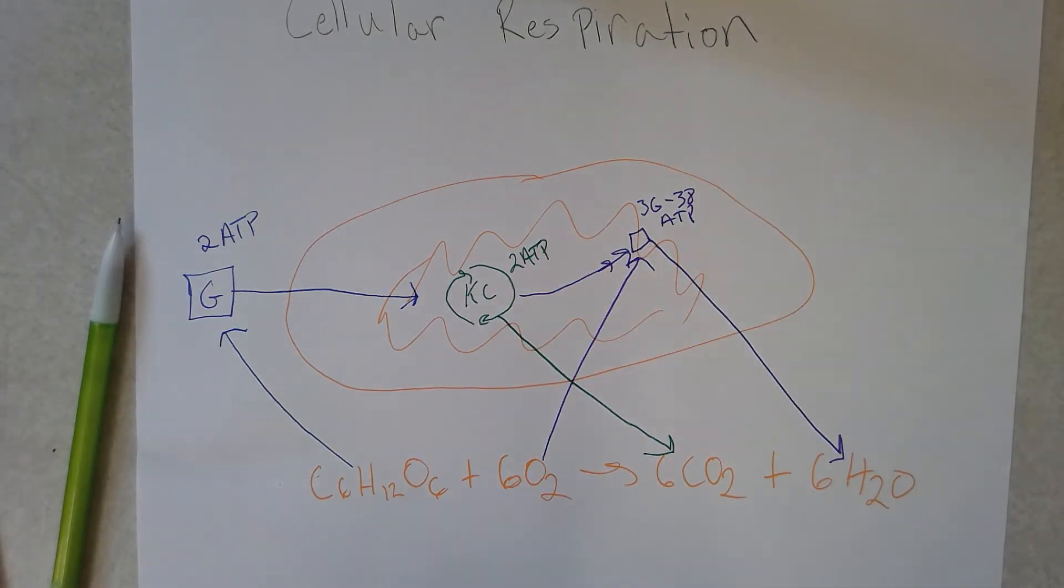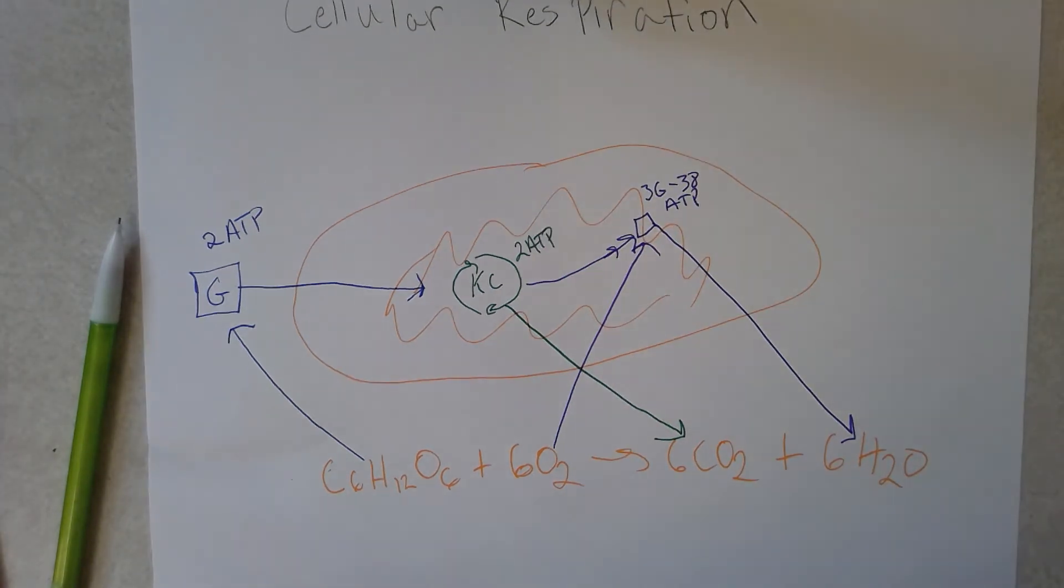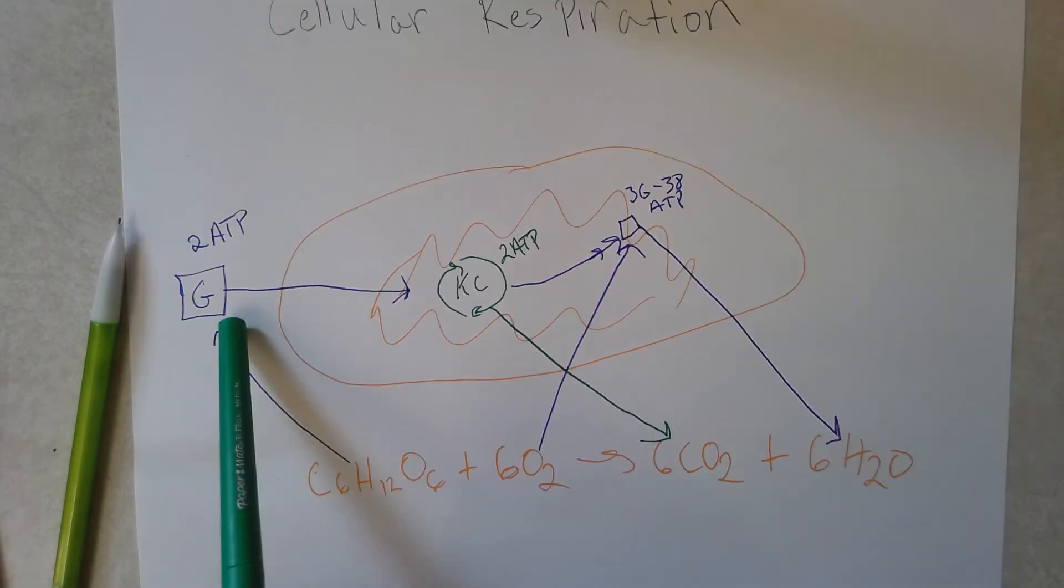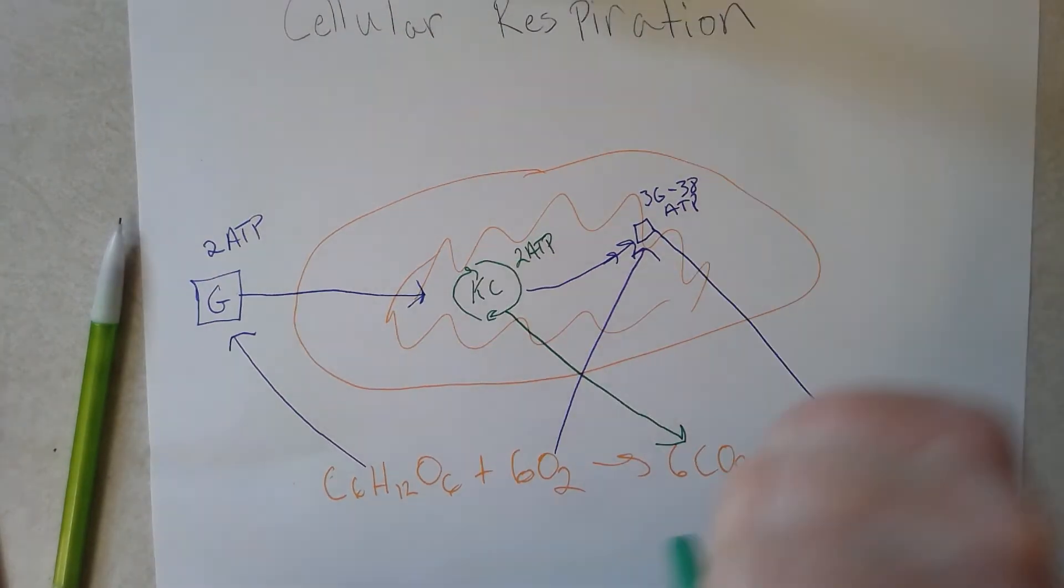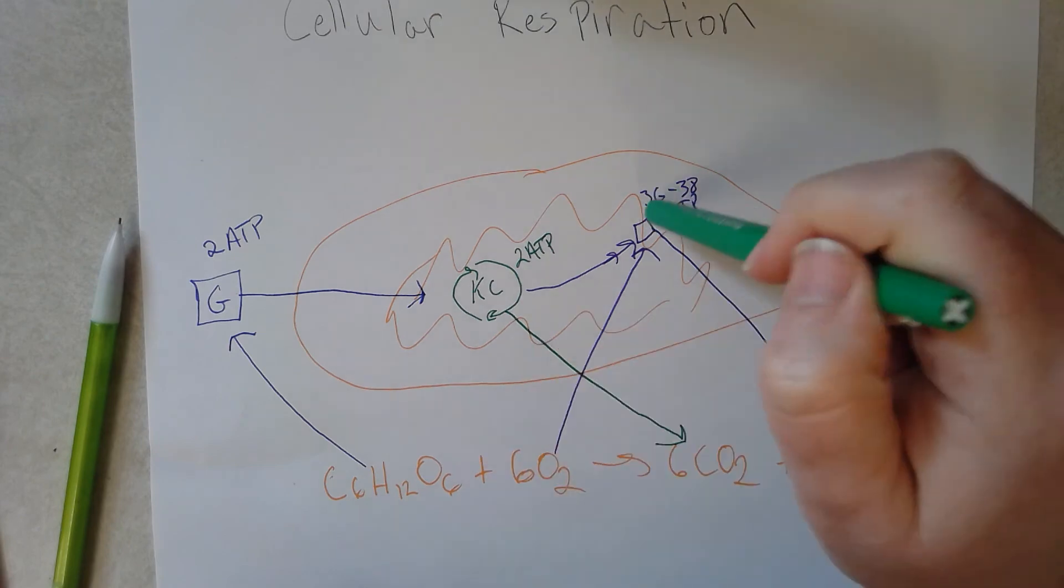So each part of this metabolic pathway produces ATP that we use for energy. And what I have expected you to know coming into the advanced biology lesson is this basic part of cellular respiration. You need to know that glycolysis happens out here in the cytosol, and the other two steps are happening within the mitochondria and the mitochondrial matrix and in the membrane.